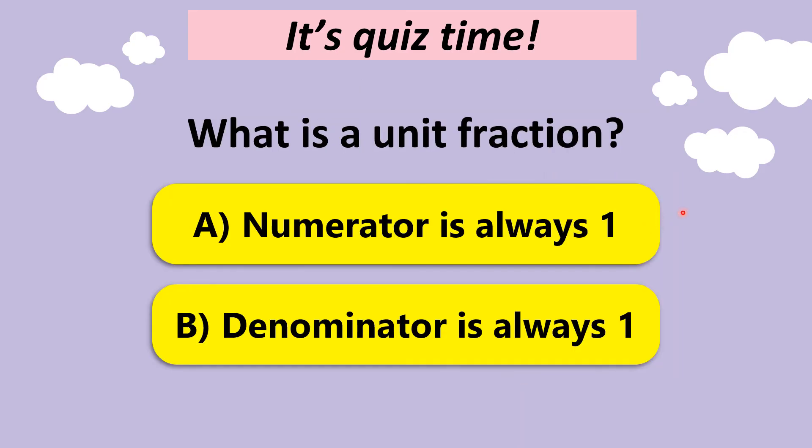What is a unit fraction? Is it when the numerator is always one or when the denominator is always one? Is it the top number or the number below? It's the first one. Numerator is always one. Denominator can be one or other numbers. It doesn't matter.